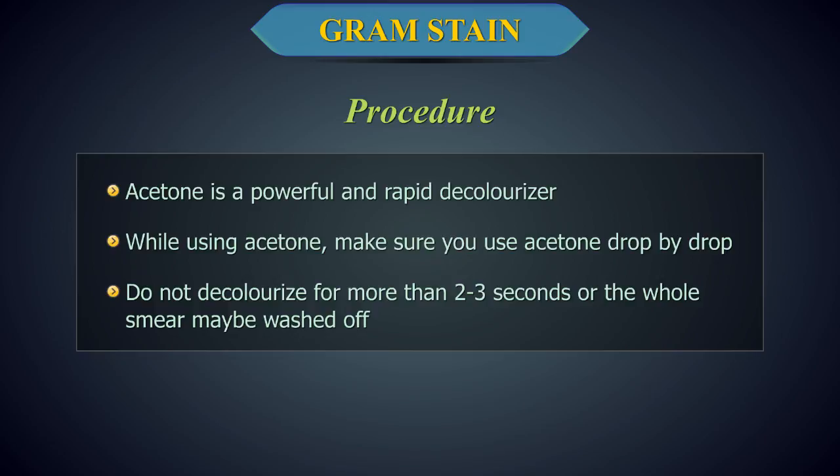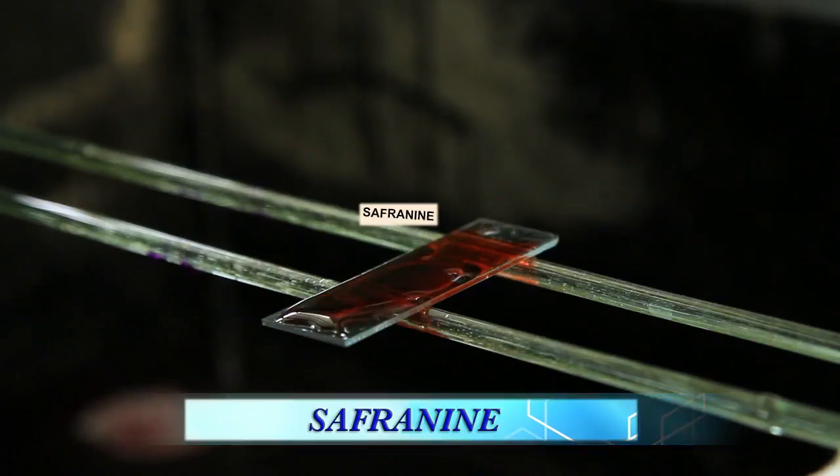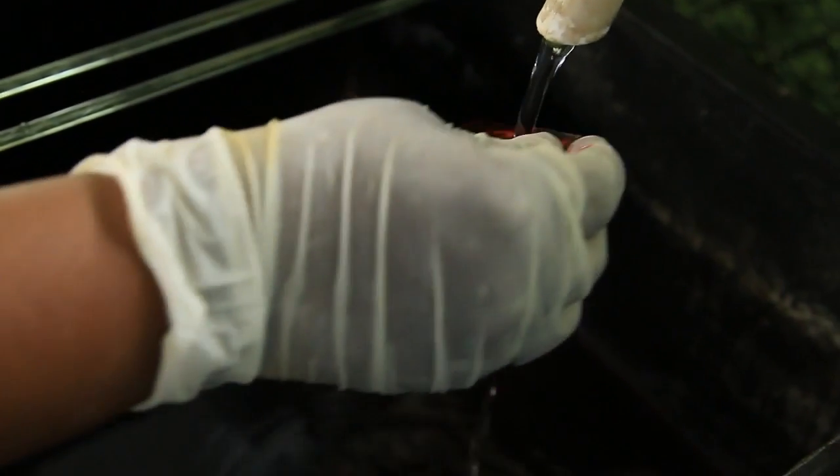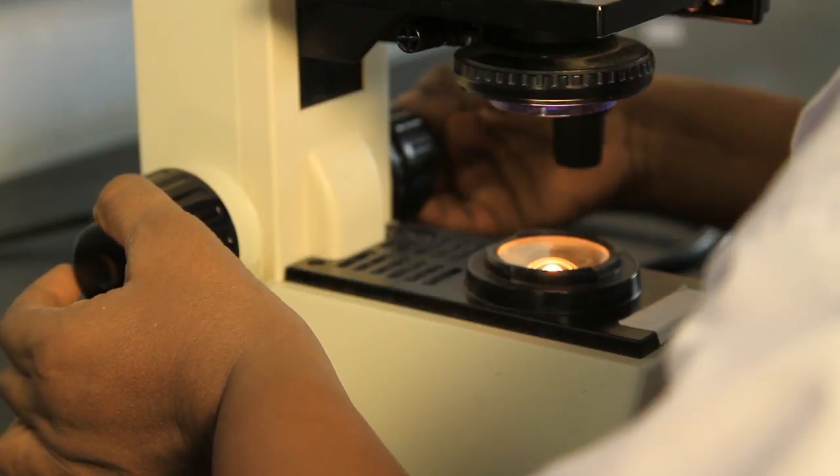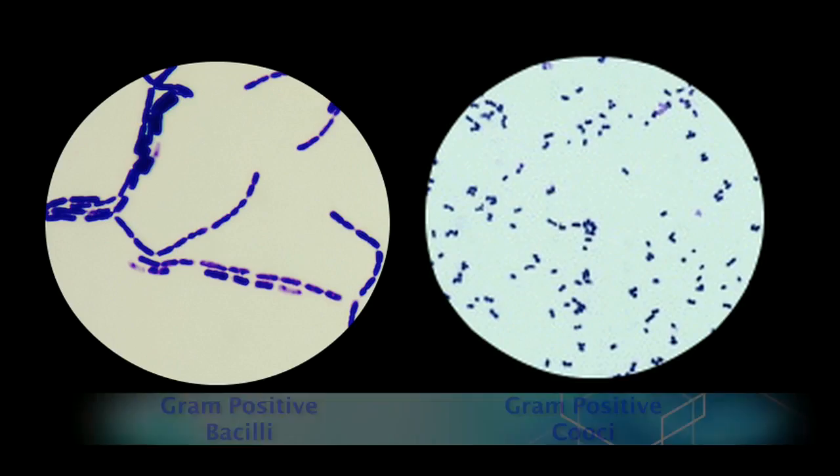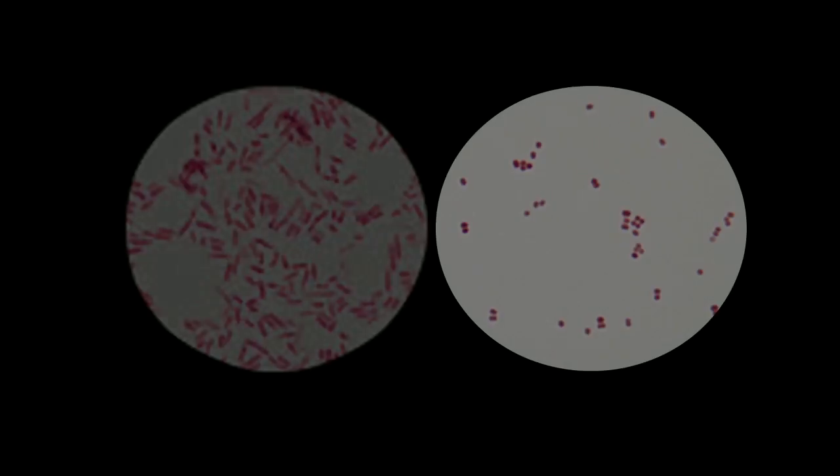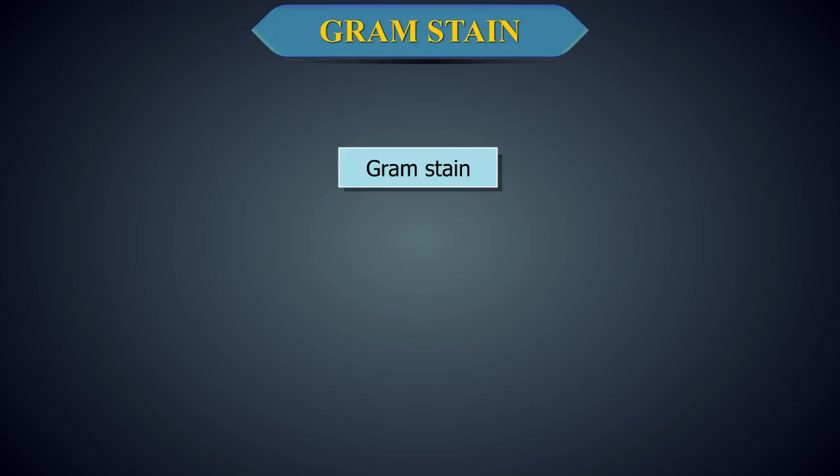Gently flood with safranin to counter stain. Cover the smear and let it stand for 30 seconds. Wash with a gentle stream of tap water. Let the slides air dry and blot gently. View the slide using a light microscope under oil immersion. Bacteria which retain the positive stain are stained purple and are called gram-positive bacteria. Bacteria which retain the counter stain take up the red color and are called gram-negative. Gram stain can therefore be called a differential stain because it differentiates between gram-positive and gram-negative bacteria.